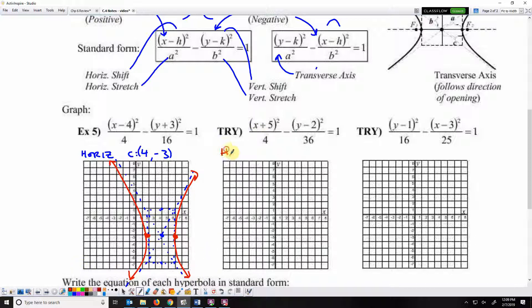Here's another horizontal one because x is first. The center is at negative 5, positive 2. The horizontal stretch is the square root of 4, so it's 2 left and right. The vertical stretch is the square root of 36, so it's up 6 and down 6. From there we build a rectangle.